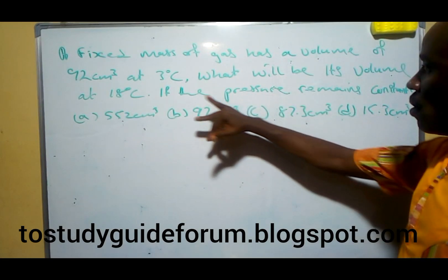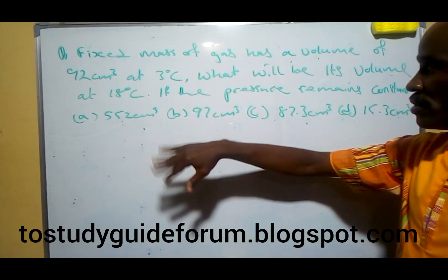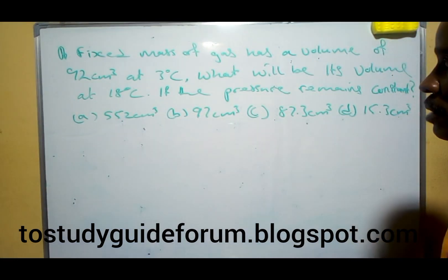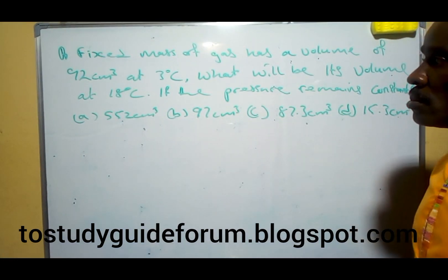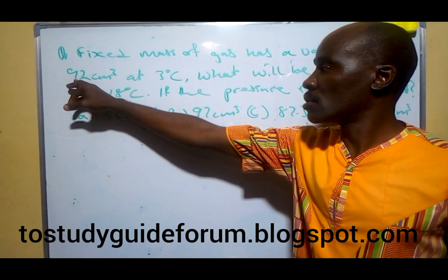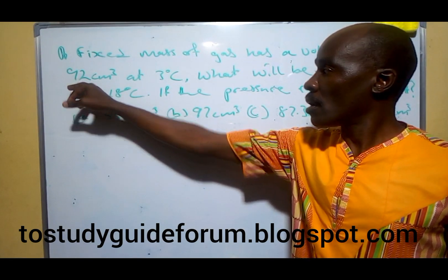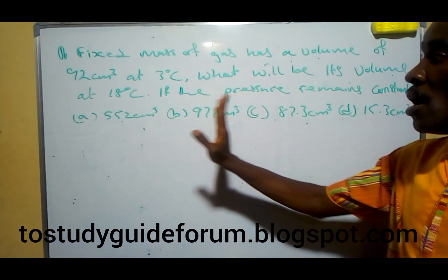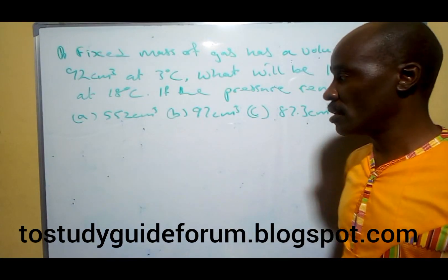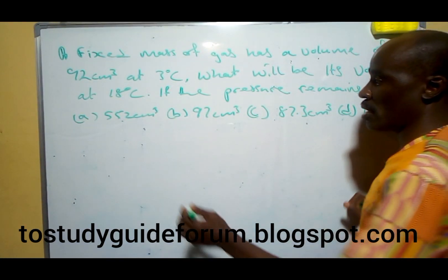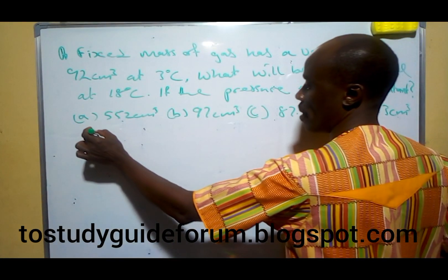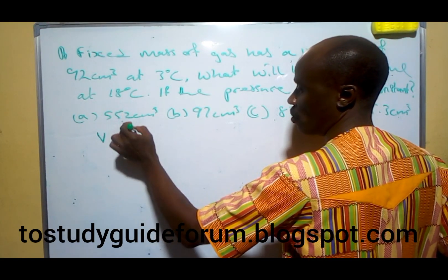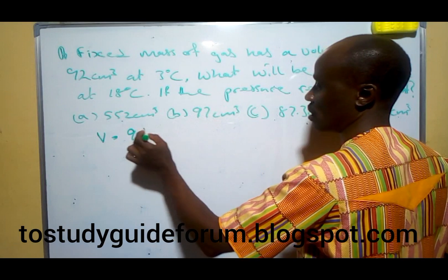Let the volume of this gas at 18 degrees Celsius — initially it was 92 cm³ at 3 degrees Celsius. What we do here is, remember, this will be Charles's Law. Since it's Charles's Law, pressure is constant.